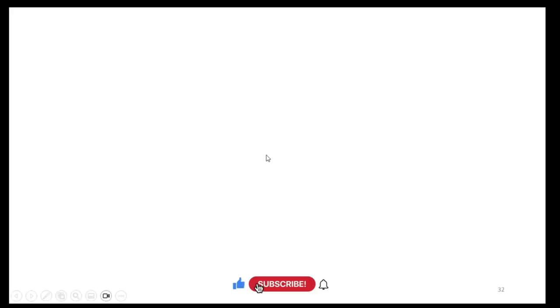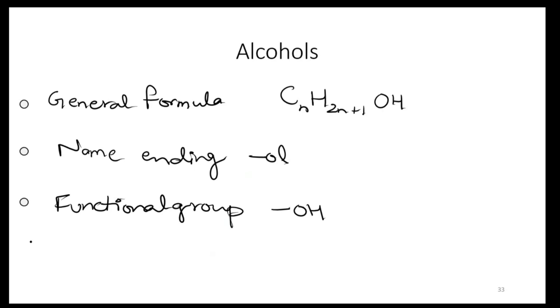Now we are talking about naming alcohols. Alcohols has a general formula which is CnH2n+1OH. The name ending is -ol and the functional group is OH.